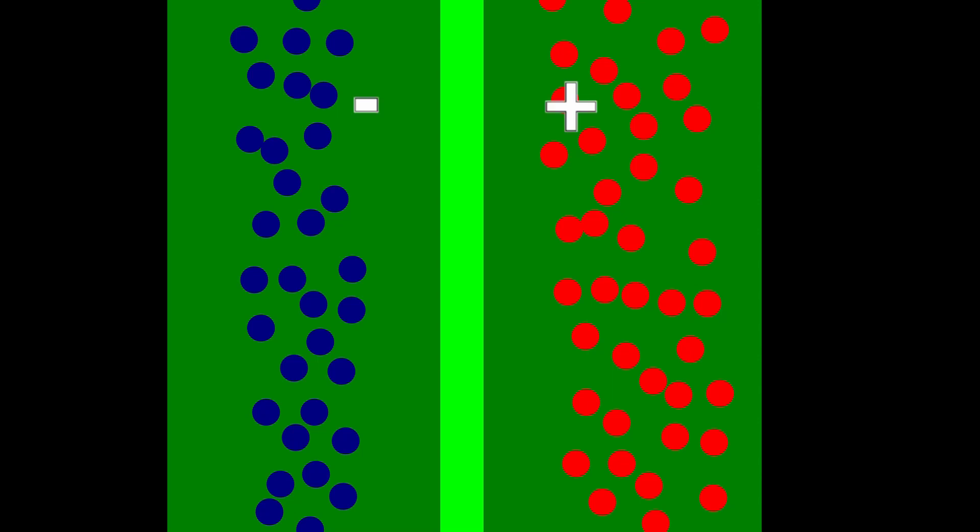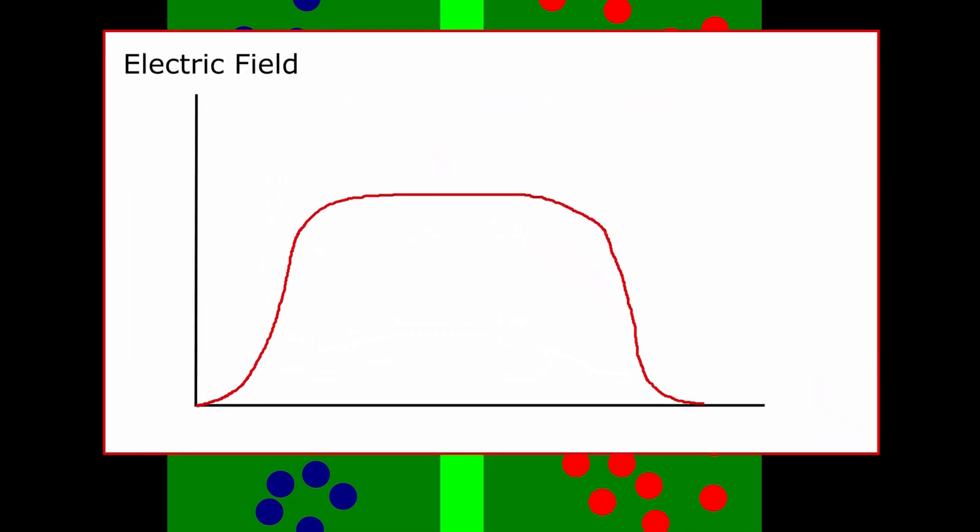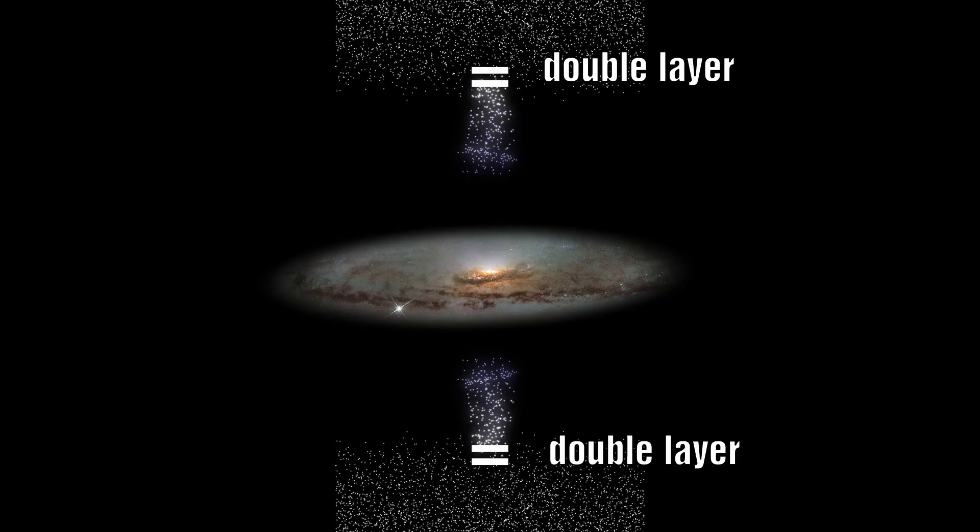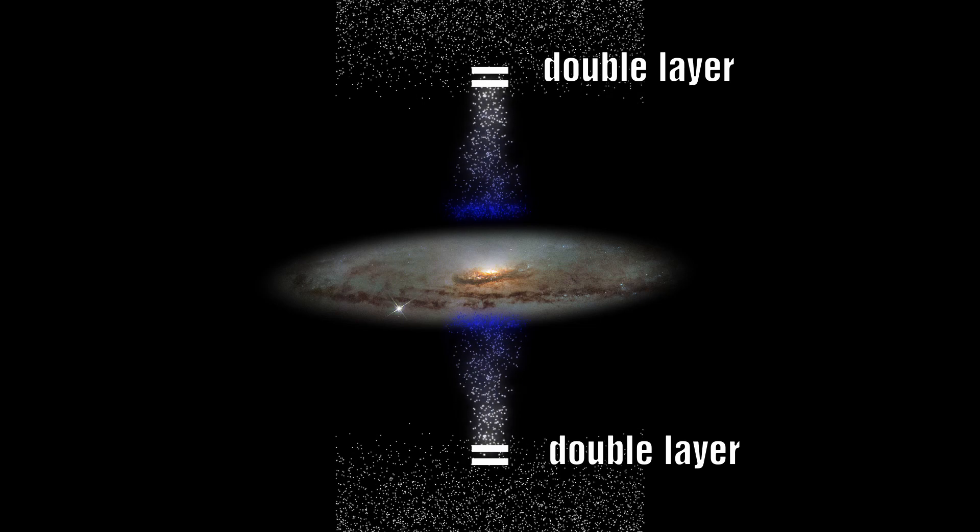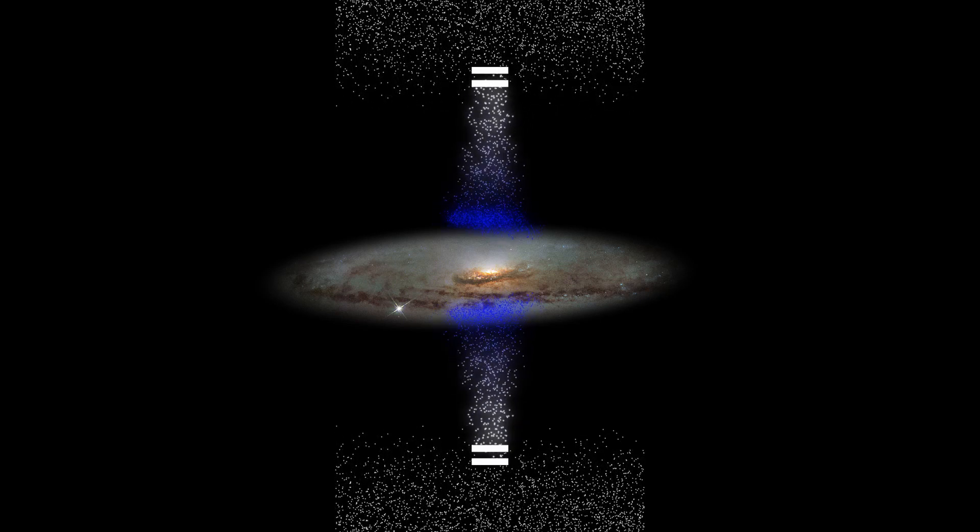Between the two layers there is a strong electric field but a weaker but larger one on the outside. Any random motion which pushes a particle between the layers will feel a huge acceleration. Some double layers are capable of accelerating electrons to relativistic velocities.